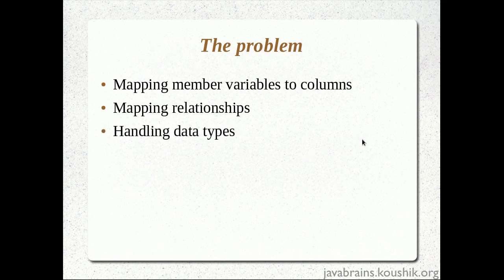The third pain point is handling data types. Say I have a Boolean in my user object — for example, 'active user' — to track whether a user is active or inactive. Most databases do not have a Boolean data type; it might be a char storing 'Y' or 'N', or an integer storing 0 or 1. I will have to handle this data type conversion myself when writing code to save or retrieve the data, and if changes are made, I have to go to that piece of code and update it manually.